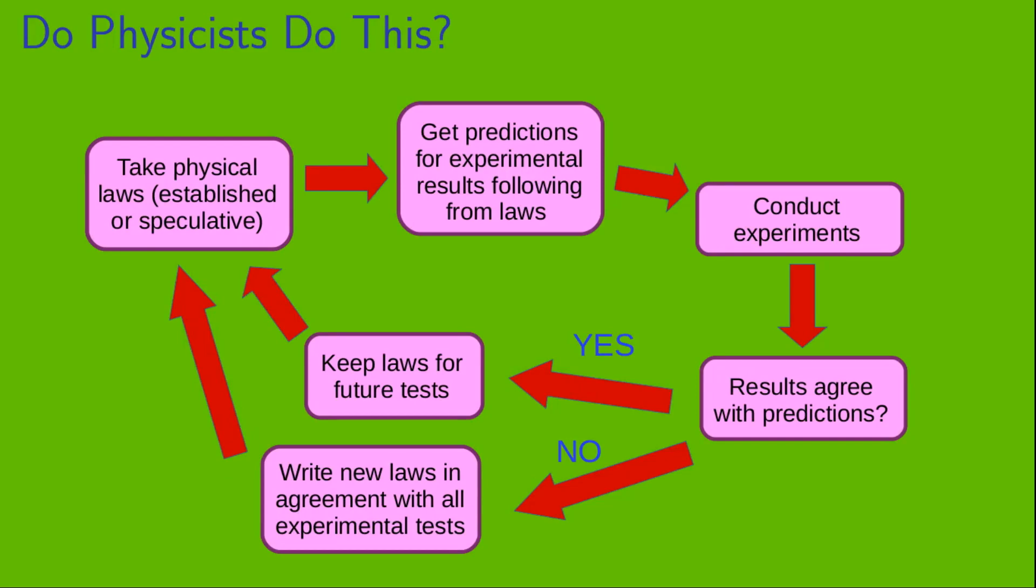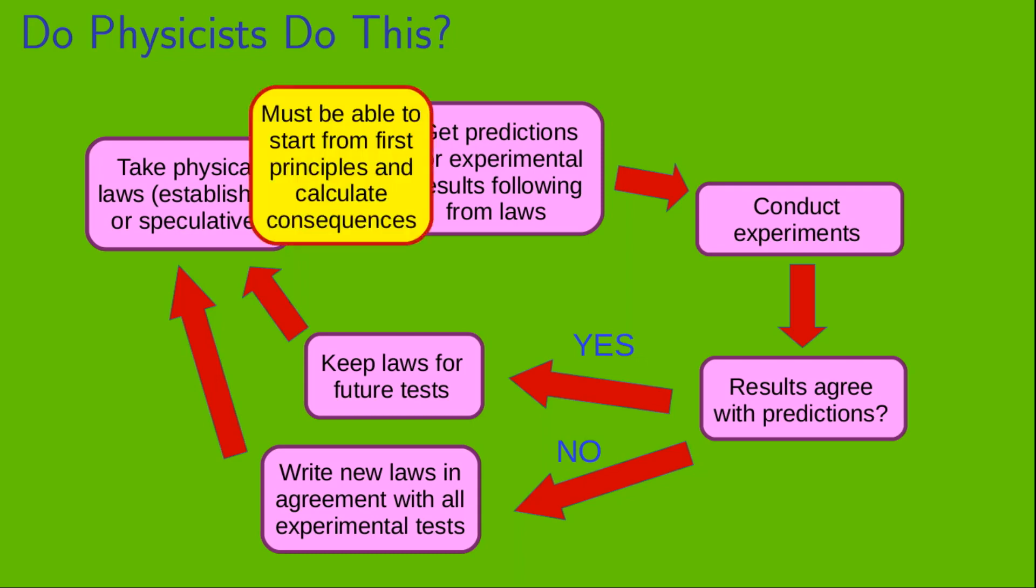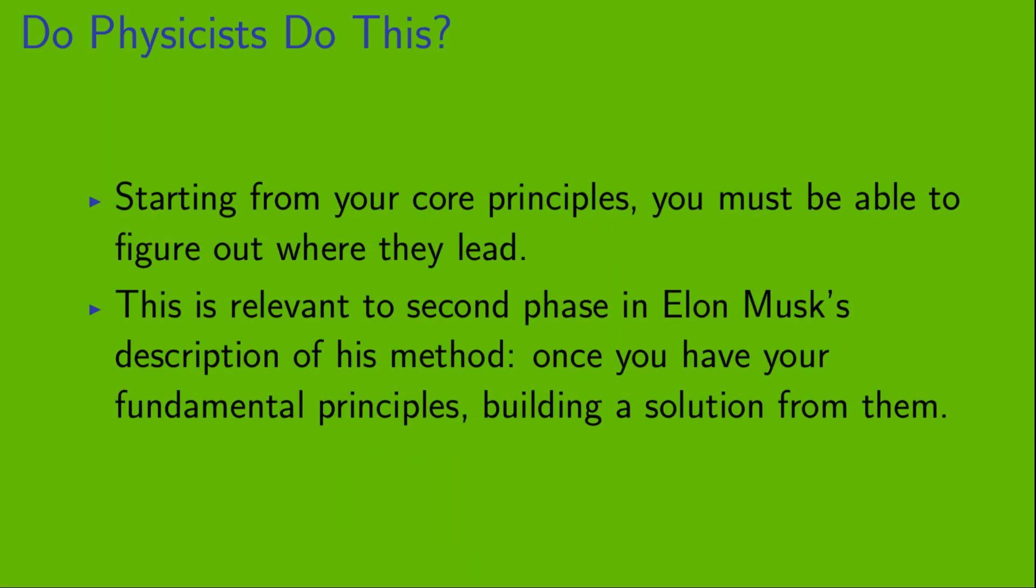First, let's look at going from step one of this cycle to step two. Here, we take our physical laws and we use them to get predictions for experiments. In order to do this, we must be able to start from first principles and calculate the consequences of those principles. So, starting from your core principles, you must be able to figure out where they lead. This is relevant to the second phase in Musk's description of his method. Once you have your fundamental principles, you build a solution from them.